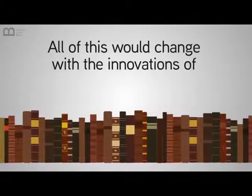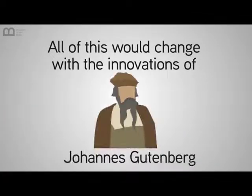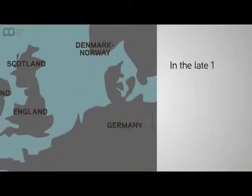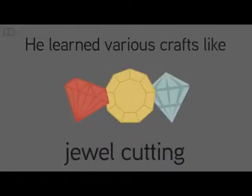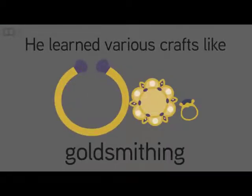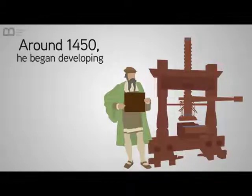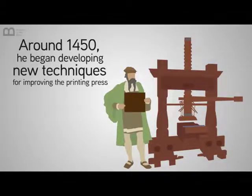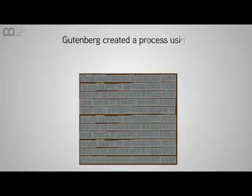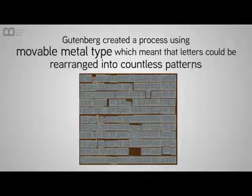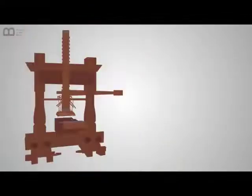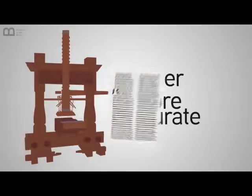All of this would change with the innovations of Johannes Gutenberg. In the late 1390s, Johannes Gutenberg was born into an upper-class family in Mainz, Germany. He learned various crafts like blacksmithing, jewel-cutting, and goldsmithing. Around 1450, he began developing new techniques for improving the printing press. Gutenberg created a process using movable metal type, which meant that letters could be rearranged into countless patterns. This was faster and more accurate than any previous method.